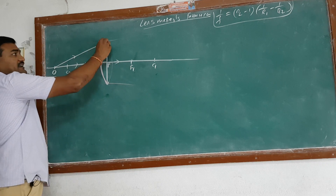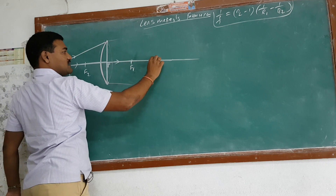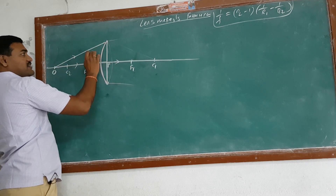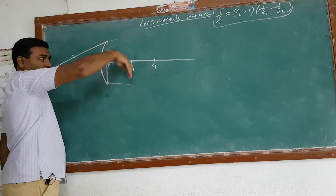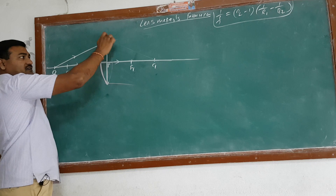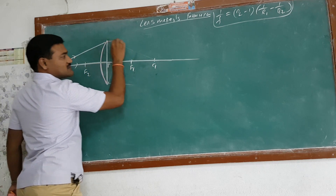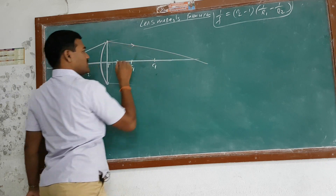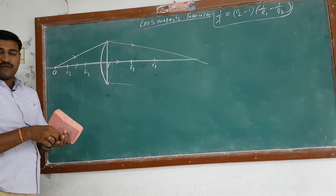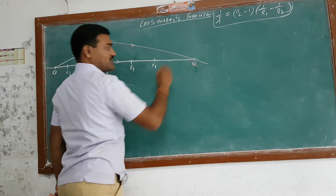For the other light ray, since this is the radius of curvature, it becomes the normal. The light ray is going from rarer to denser medium, so it will bend towards the normal — not go straight. So it bends like this, and the two refracted rays meet at a point. I get the image somewhere; let us say the image is at point Q.